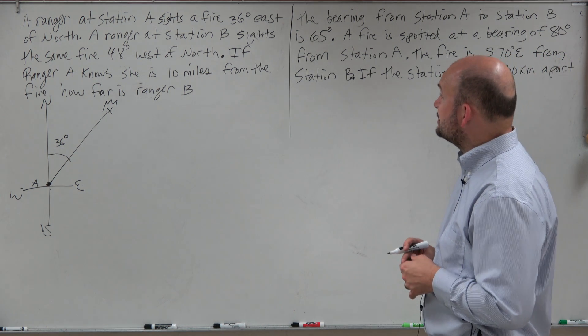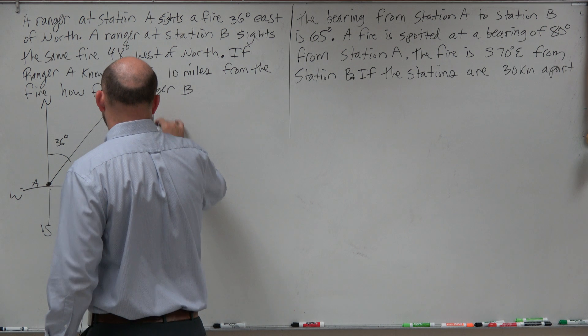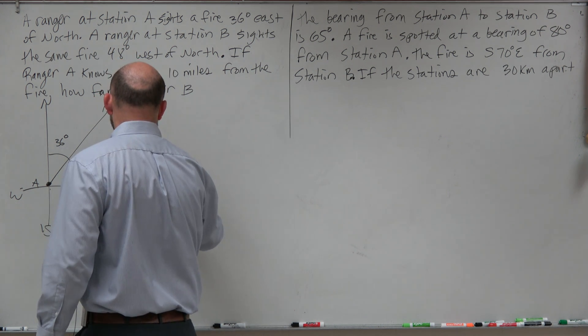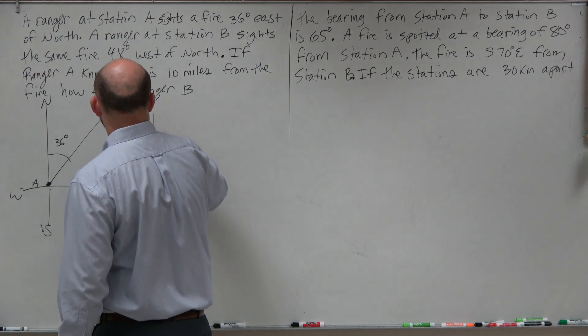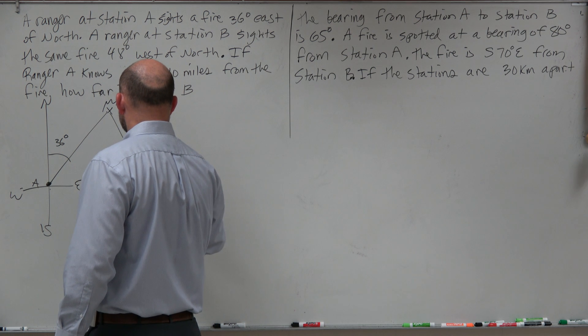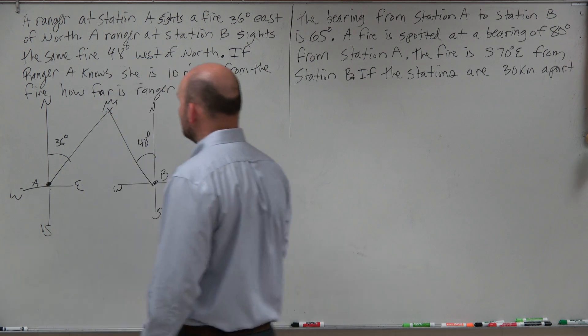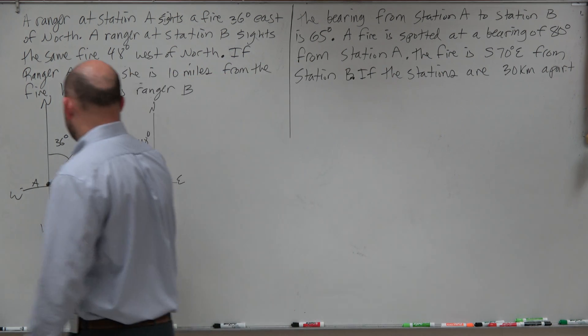And then it says there's a ranger station B sites the same fire 48 degrees west of north. We'll say here's ranger station B, and that one is going to be 48 degrees west of north. Here's due north, east, south, west. You can see we kind of have a little bit of a picture of a triangle going on here.